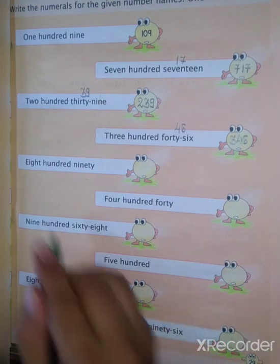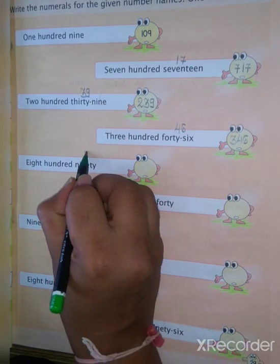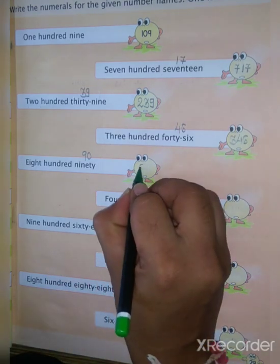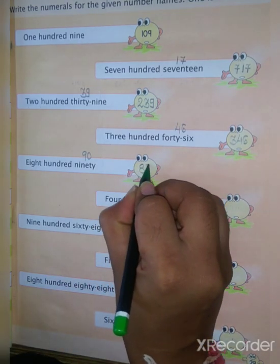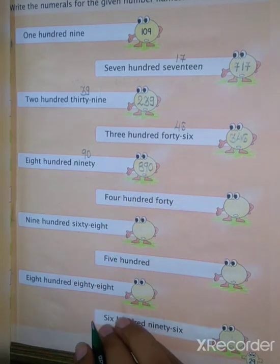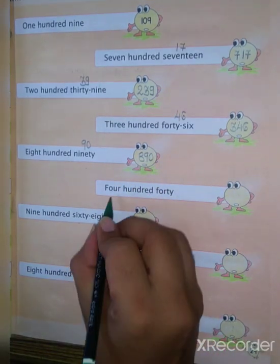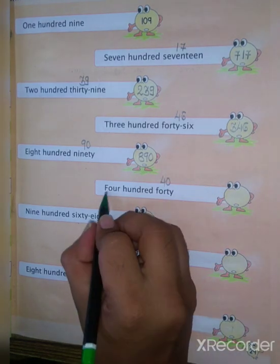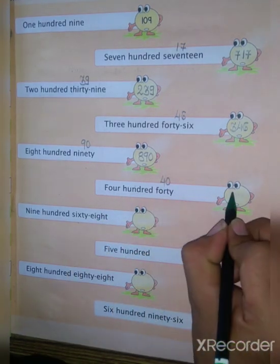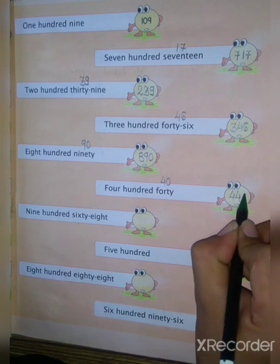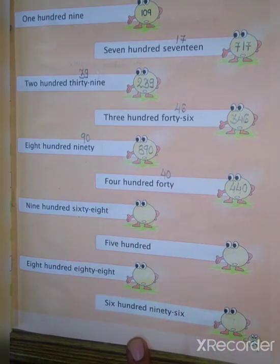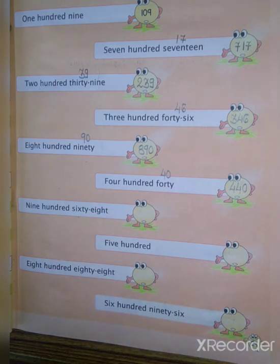Next value is 890: 90 means 9, 0. So what is your answer? 890. Next value is 440: 40 means 4, 0, so 440. After these three examples you have to do on your own in homework.